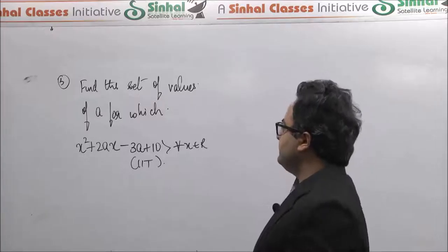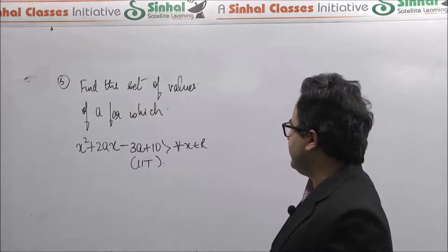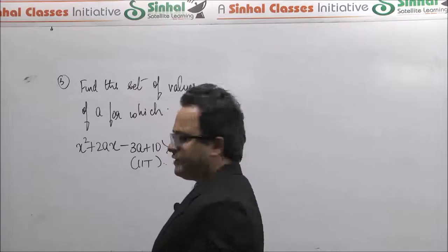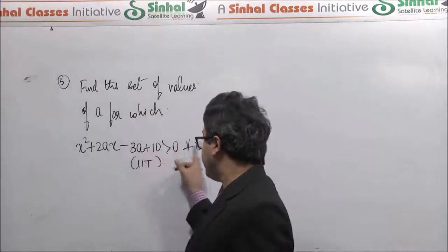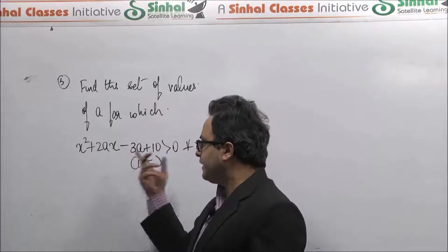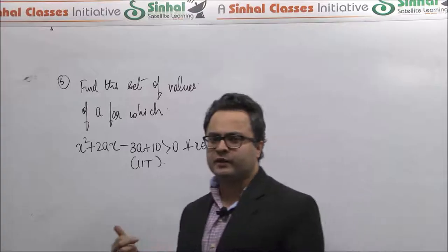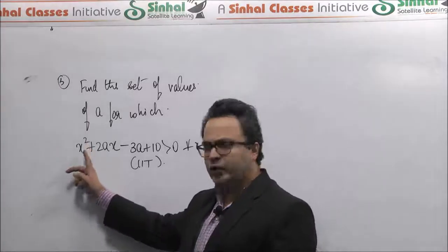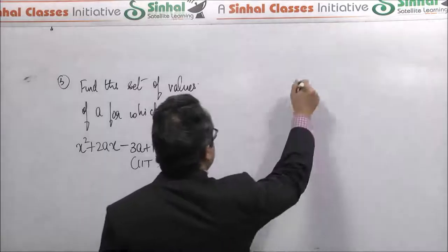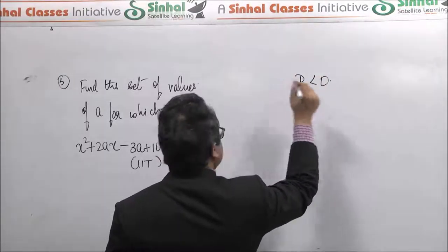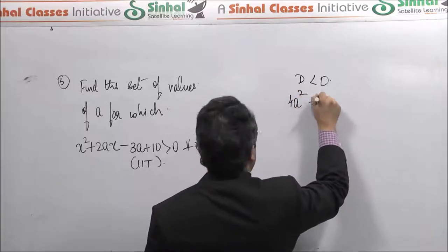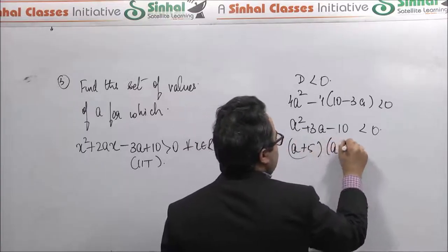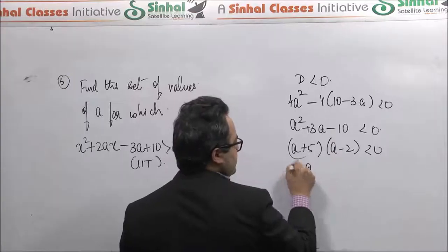This is a parameter problem. We have a quadratic expression with parameter a, and the condition is that the expression is positive for all possible real values of x. For a quadratic expression to always be positive, two conditions are required: the coefficient of x squared must be positive — which is already satisfied since it is 1 — and the discriminant must be negative. The discriminant expression factorises as (a plus 5)(a minus 2), which by the wavy curve method gives the answer a in the interval minus 5 to 2.